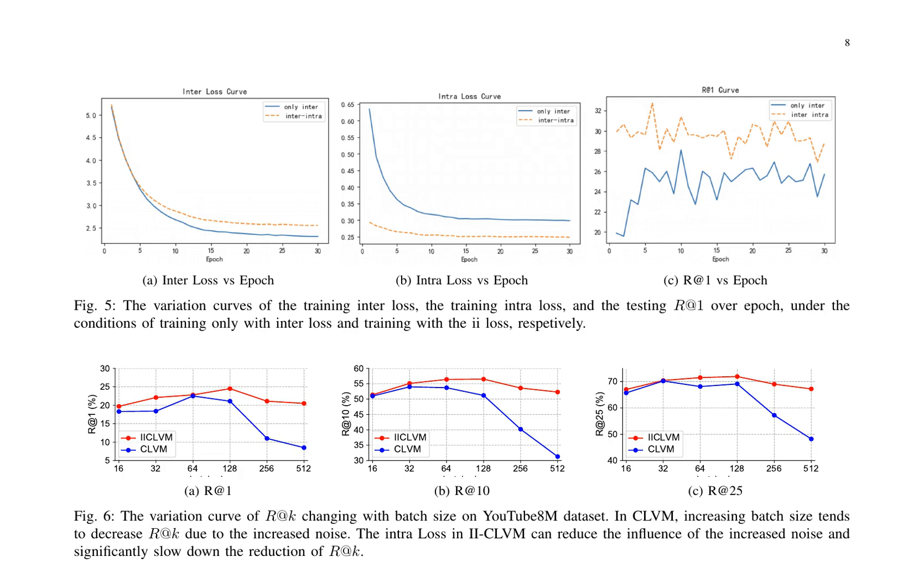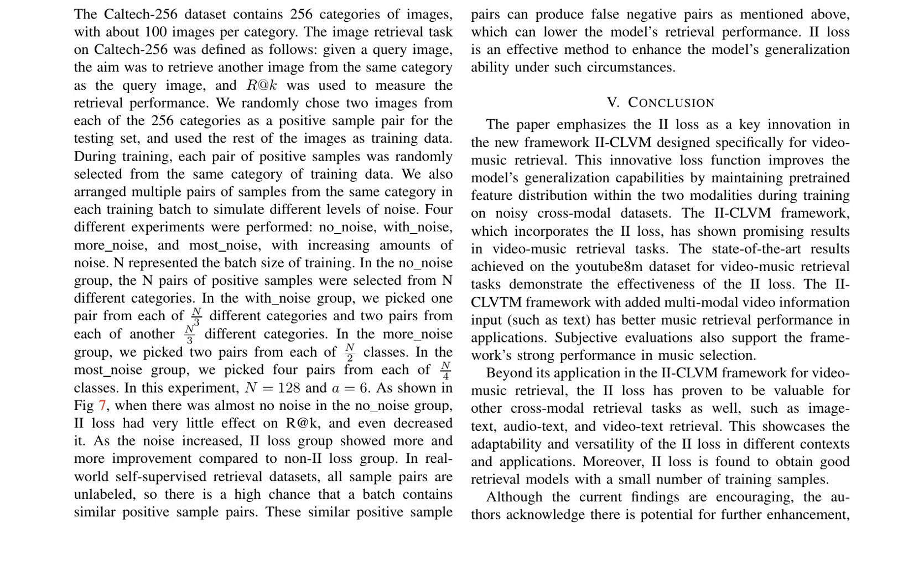The authors introduce a novel loss function, the inter-intramodal loss, designed to mitigate the effects of noisy training data and improve the model's generalization capabilities. Experimental results demonstrate the effectiveness of the II loss in improving the model's performance on video-text retrieval tasks, with significant R@K improvements on various datasets, including MSVD, MSRVTT, and VATEX. The II loss is shown to be effective in resisting false-negative noise interference and achieving higher R@K values compared to the baseline model.